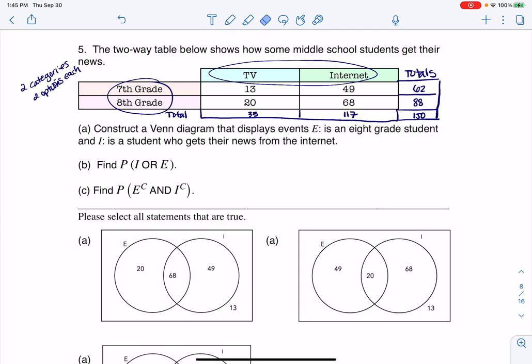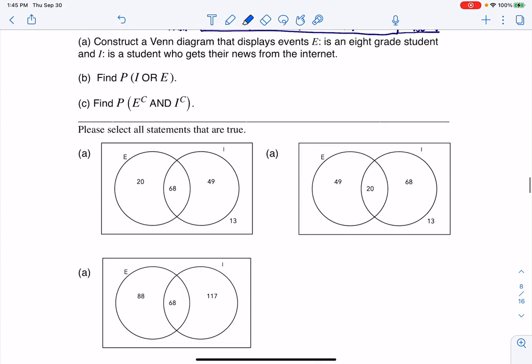But you need to focus on the four numbers, the four numbers that are your frequency counts, not actually the totals. So this 13, 49, 20, and 68, they need to map into one of these four areas. And when I say the four areas, anytime you have this 2x2 Venn, you've got your left moon, you've got your right moon, you've got the football in here, and then you've got the complement, the rest of the universe.